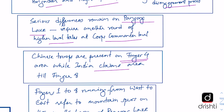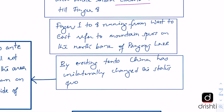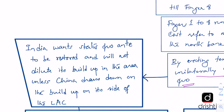The editorial points out that serious differences remain on Pangong Lake, which may require another round of higher-level corps commander talks. Chinese troops are present up to finger 4 on the northern bank while India says the LAC passes through finger 8 and demands Chinese withdrawal. China claims the LAC passes through finger 2 and they are only at finger 4. By erecting tents at finger 4, China has tried to unilaterally change the status quo. India's stand is that it will not dilute its military buildup unless China draws down on its side.